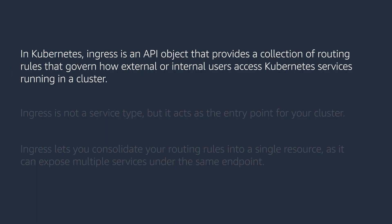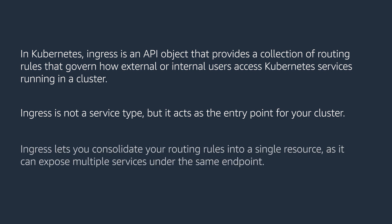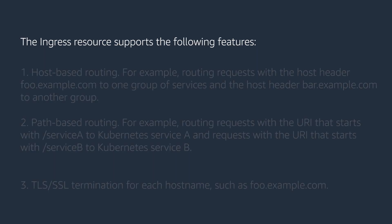In Kubernetes, Ingress is an API object that provides a collection of routing rules that govern how external or internal users access Kubernetes services running in a cluster. Ingress is not a service type, but it acts as an entry point for your cluster. Ingress lets you consolidate your routing rules into a single resource, as it can expose multiple services under the same endpoint.